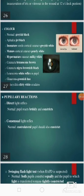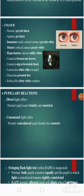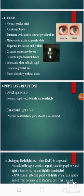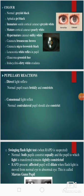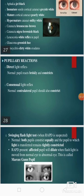Then we should see the color of the pupil. Normally it is grayish black. In hypermature cataract it is milky white; in cataracta brunescens it is brown; in cataracta nigra it is brownish black. In leukocoria there is a white reflex in the pupil; in glaucoma there is a greenish hue; in iridocyclitis there are dirty white exudates.